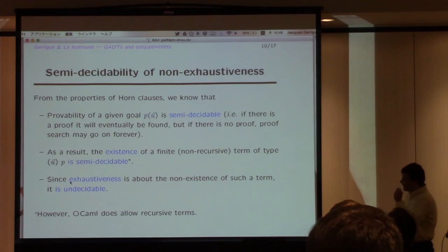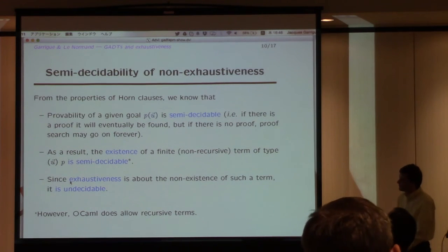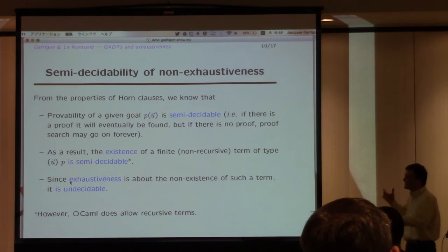So as the result, existence of a finite term of type P U is only semi-decidable. So you could say, in other words, that exhaustiveness is about the non-existence of such terms. So it's undecidable from the beginning.